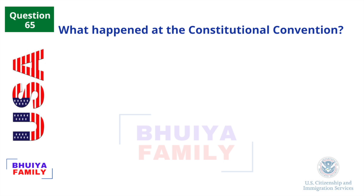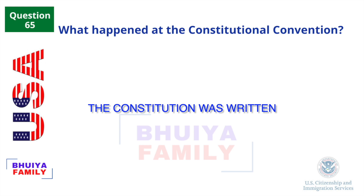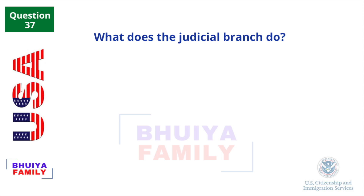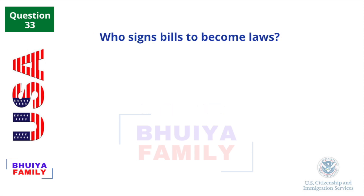What happened at the Constitutional Convention? The Constitution was written. Who is in charge of the executive branch? The President. What does the judicial branch do? Reviews laws. Who signs bills to become laws? The President.